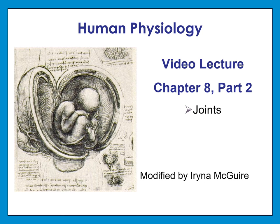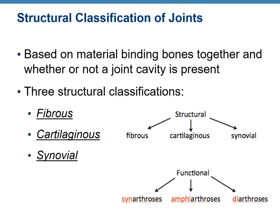Hello everybody! In this video lecture we continue covering joints. This is chapter 8 part 2. Just want to remind you that we can classify joints based on their structural characteristics and functional characteristics. Structural characteristic is the type of material binding bones together, and joints can be fibrous, cartilaginous, or synovial. Functional characteristic is based on degree of movement.